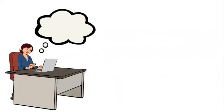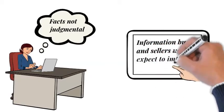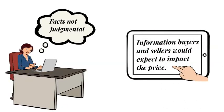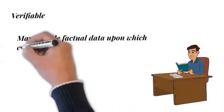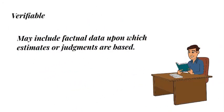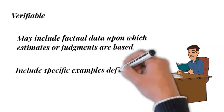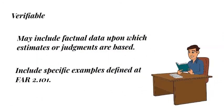To summarize, cost or pricing data are factual and not judgmental, include information that both buyers and sellers would expect to impact the price significantly, they are verifiable, may include factual data upon which estimates or judgments are based, and may include specific examples cited within the definition at FAR 2.101.